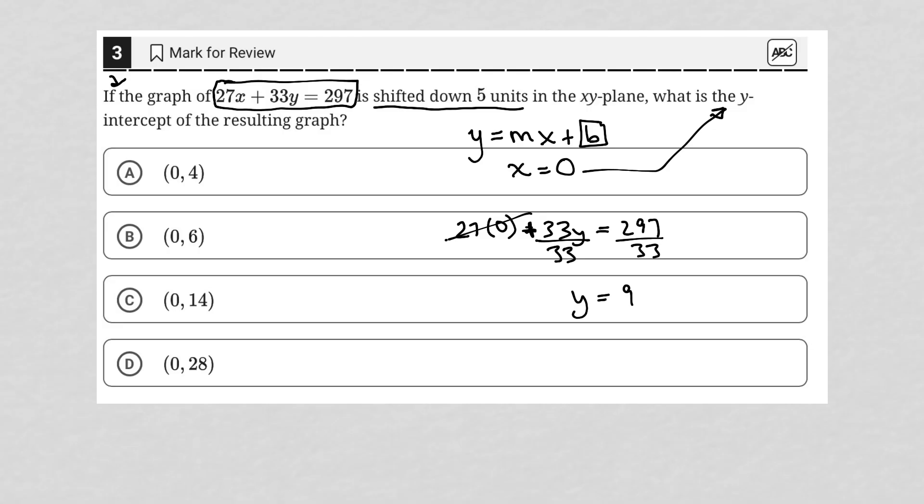Therefore, 9 is the y-intercept before being shifted down five units. So once we shift that down five units, I subtract five, that means my new y-intercept should be at four. So choice A is the correct answer.